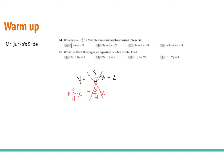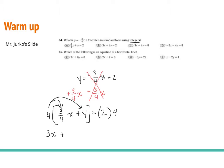From here we're going to get 3 over 4 x plus y equals 2. Now remember, whenever we're trying to write something using only integers, we want to multiply by the number that's in the denominator, and the only number in the denominator is 4. Let's multiply everything by 4 — so 4 times 3 over 4 x gives us 3x. It also gets distributed to the y, so it's plus 4y, and 2 times 4 is 8.